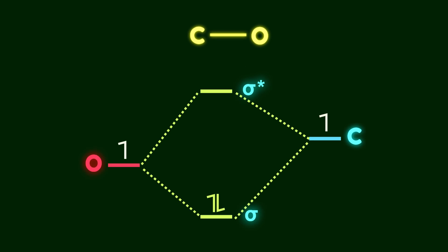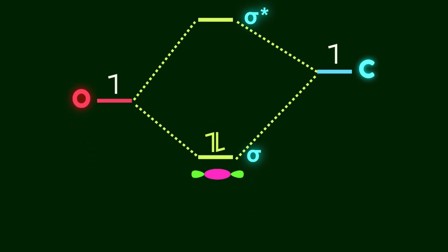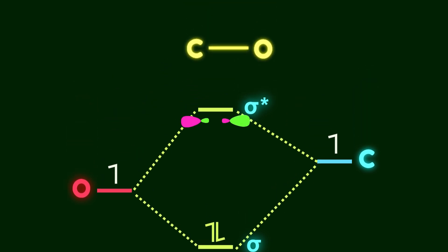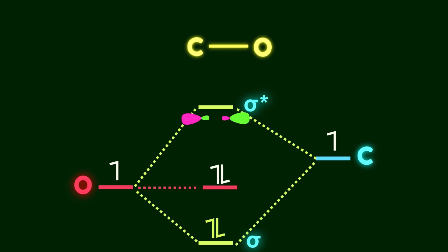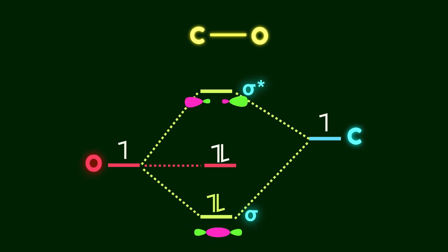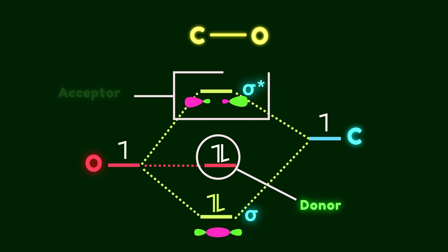To continue our discussion, we need to understand how a carbon-oxygen bond interacts with other functional groups. This is a molecular orbital picture of a carbon-oxygen bond. Here is the bonding orbital filled with electrons, and here is the anti-bonding orbital. The oxygen atom also has non-bonding electrons. When needed, oxygen can use its non-bonding electrons and act as a donor group — electrons from the lone pair can move into an empty orbital of a suitable acceptor. At the same time, the carbon-oxygen bond can act as a good acceptor because it has an empty anti-bonding orbital, and electrons from a donor group can move into it.